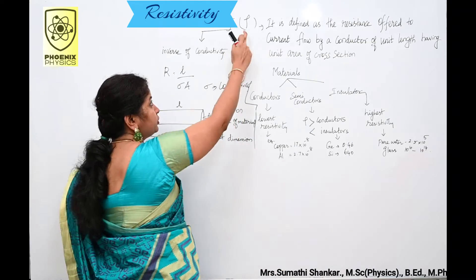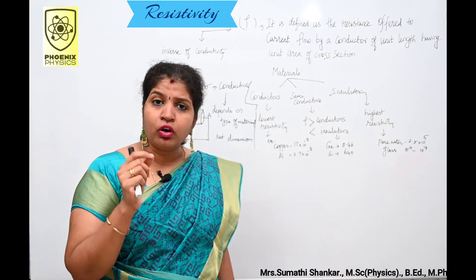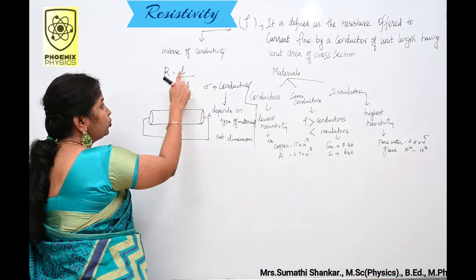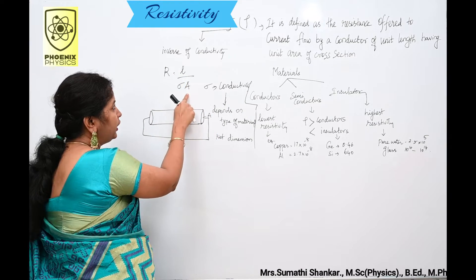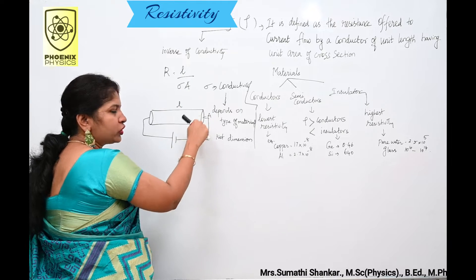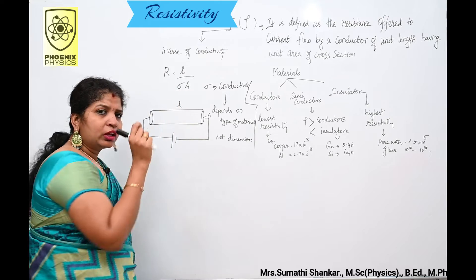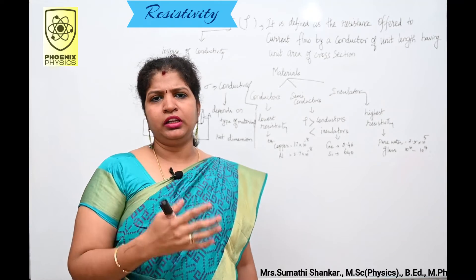It is denoted by the symbol Rho. In our previous video, we derived the formula for resistance that is R is equal to L by sigma into A. Here L is nothing but the length of the conductor. A is cross sectional area of the conductor. Then what about sigma? Sigma is nothing but conductivity of the material.